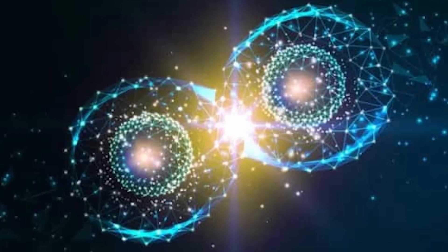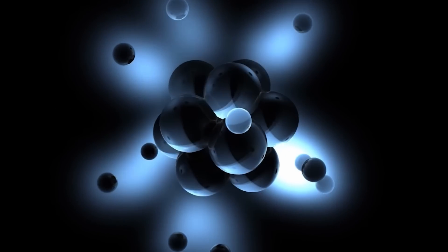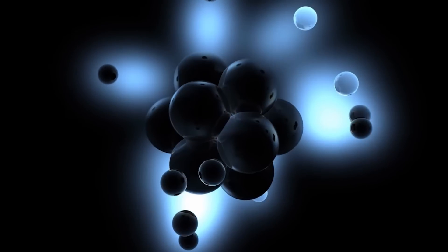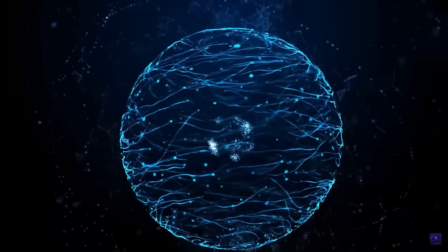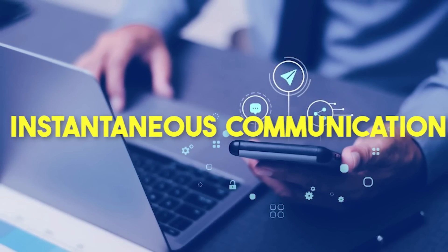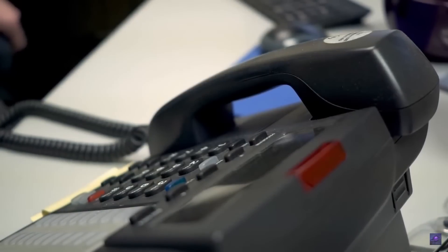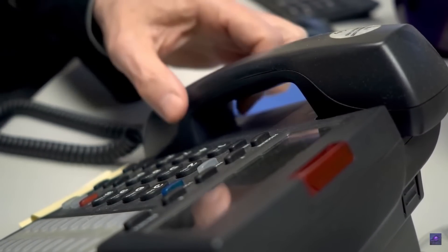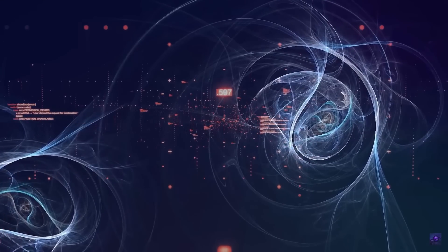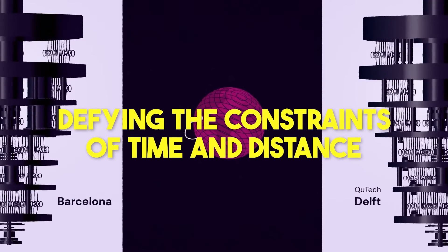We entangle two qubits, which means they become deeply connected. Then, by teleporting the information from one qubit to another, we achieve something truly amazing. Instantaneous communication. It's like sending a message faster than the speed of light, breaking all the rules of traditional communication. The quantum internet opens up a whole new world of possibilities, where information can travel in an instant, defying the constraints of time and distance.